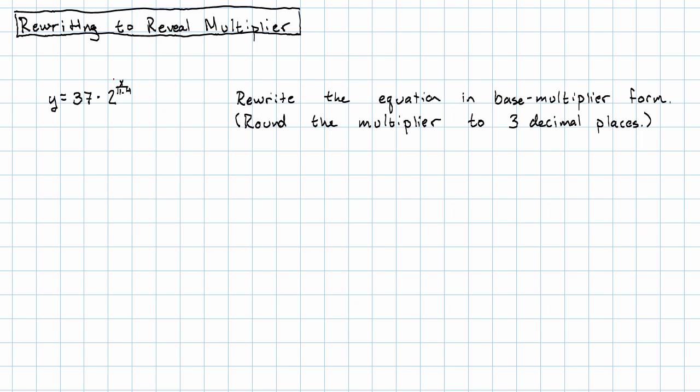The thirty-seven isn't really going to do anything in this process. We want to look at just the exponent part, and we want to write two to the x over eleven point four as something to just the x power. How could we do that?